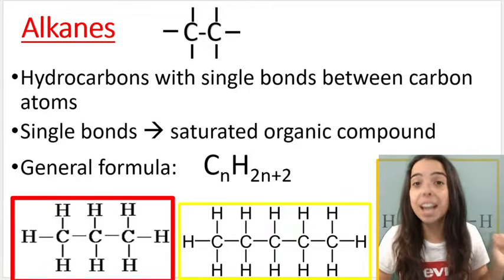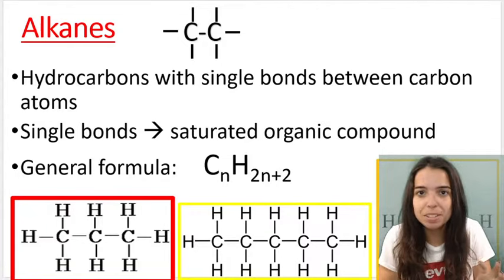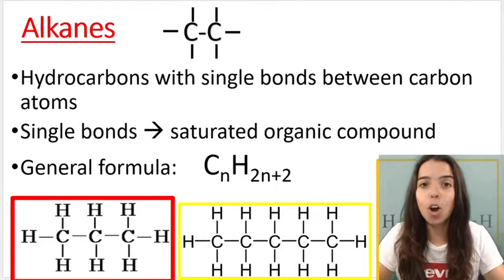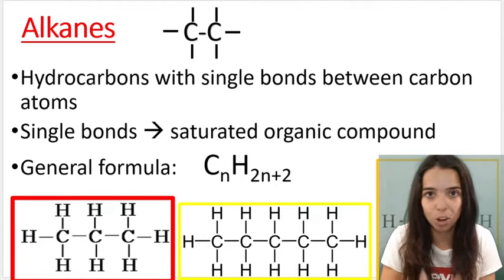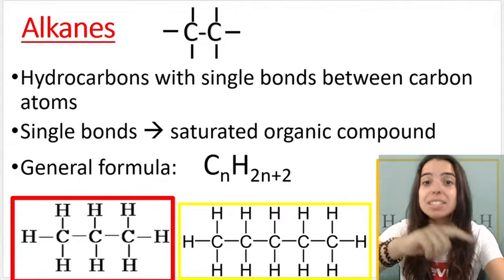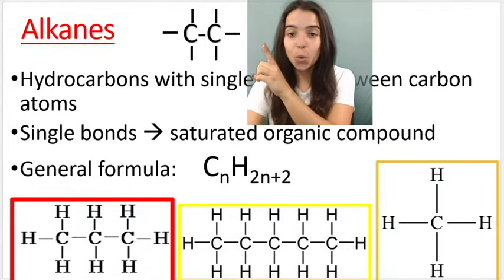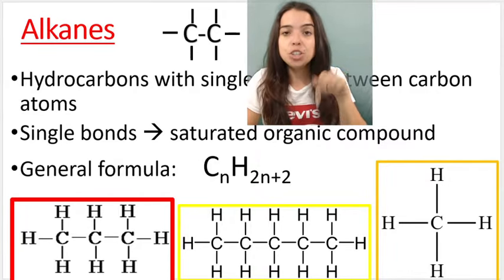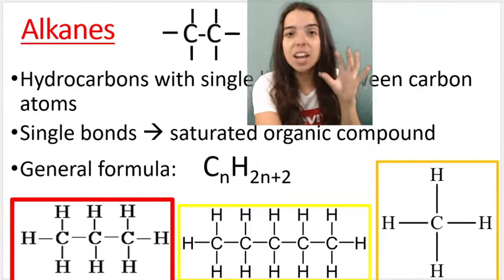So alkanes are saturated organic compounds. Saturated meaning that they have no multiple bonds between the carbons in the main chain of the organic compound. In other words they have single bonds between the carbons in the main chain. We discussed the functional group of alkanes which is over here and we also chatted about the general formula. You guys need to know these.